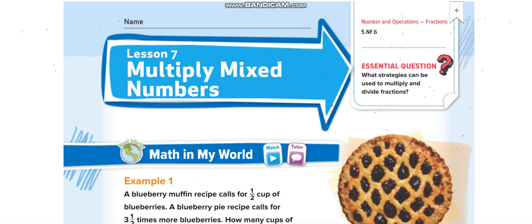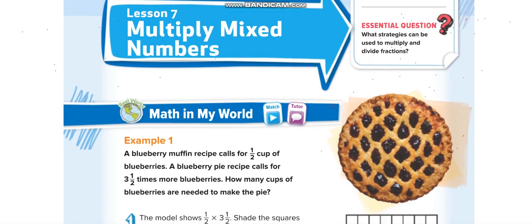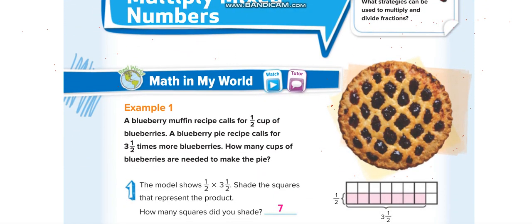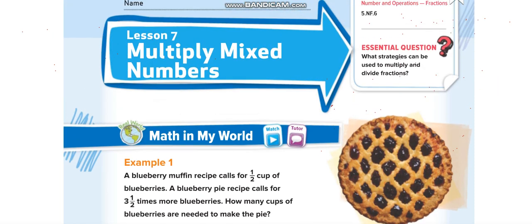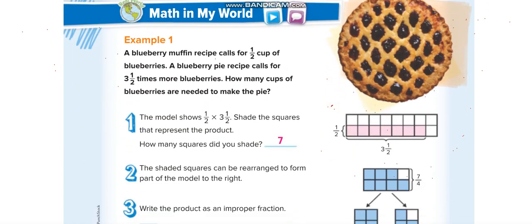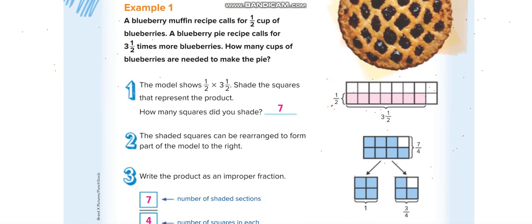Multiply mixed numbers. When you multiply mixed numbers you know how to convert a mixed number into an improper fraction and improper fraction into a mixed number. So to multiply the mixed numbers first you have to convert them into an improper fraction.